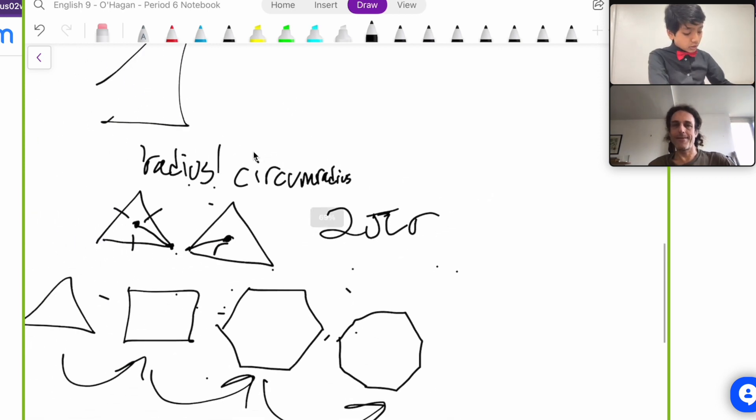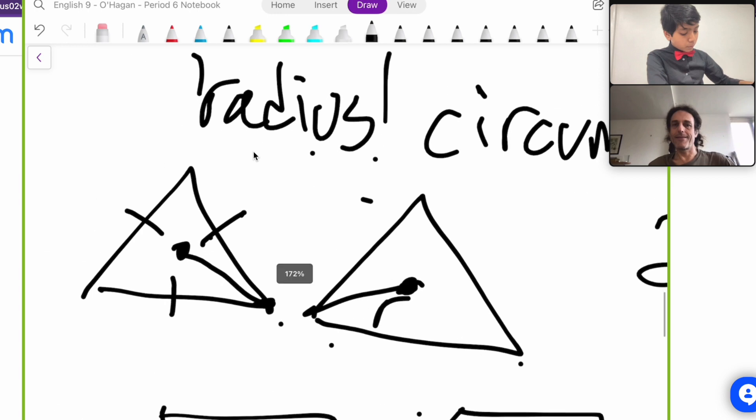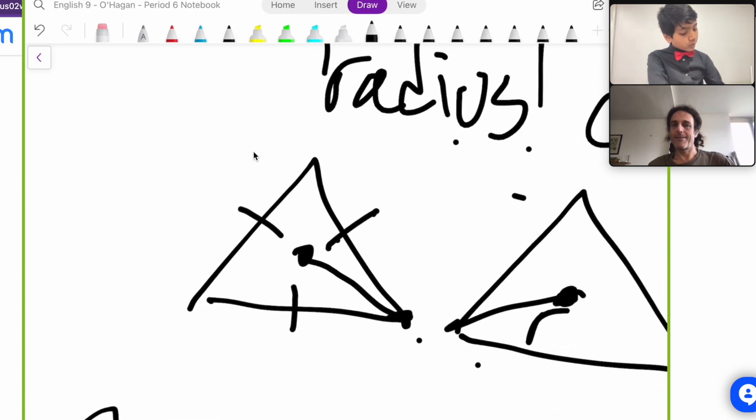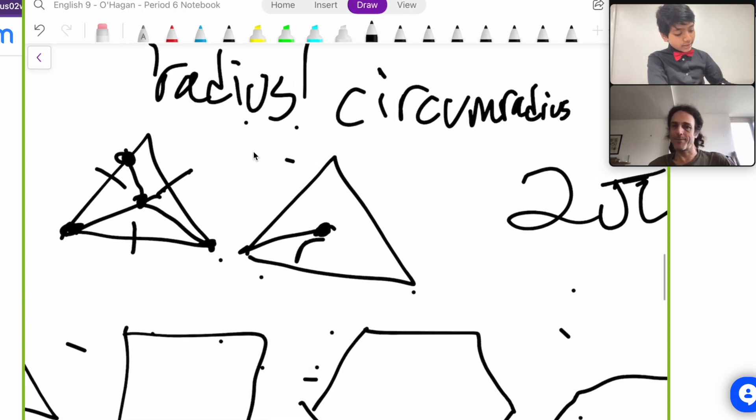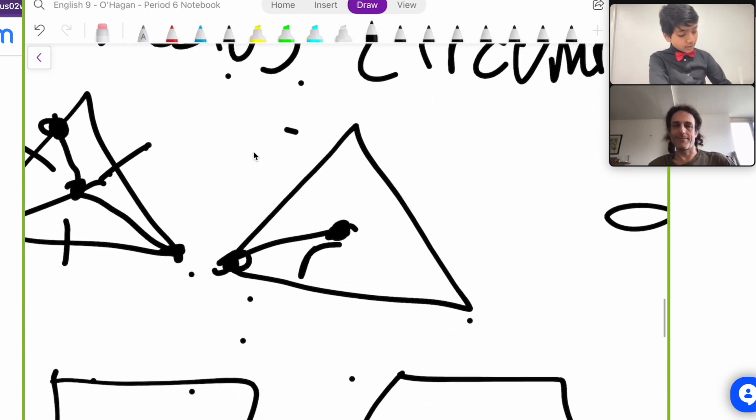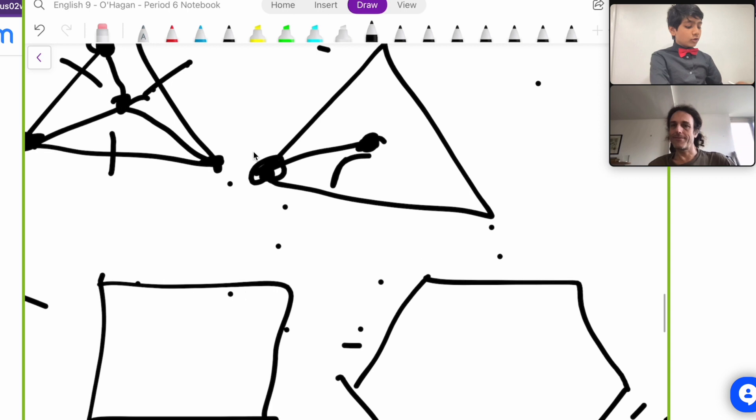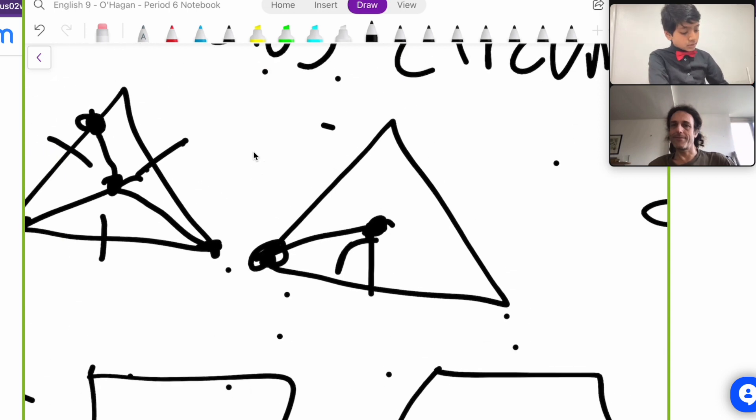But the problem is, what is the radius of a regular polygon? Because one point of the polygon is not equidistant from the center, while another one might be a different distance from the center. So I eventually settled on the definition of the circumradius, although you might as well use the apothem as well.